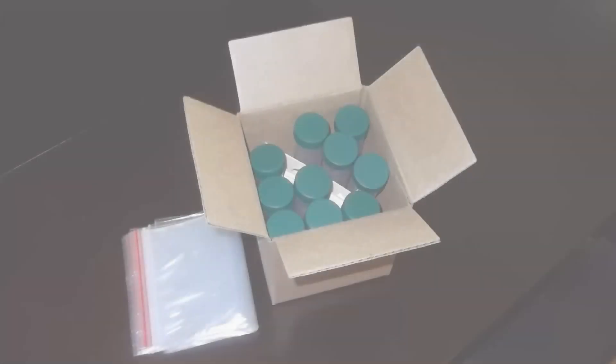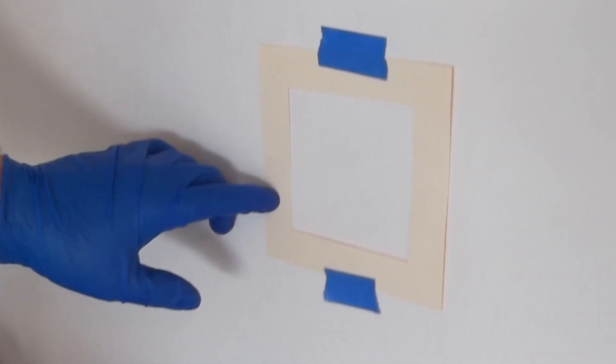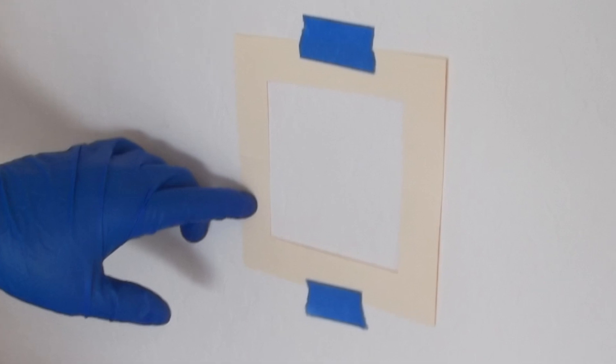To test for methamphetamine and clandestine drug residues, place a 10-centimeter by 10-centimeter template on the surface to be sampled and secure the template.